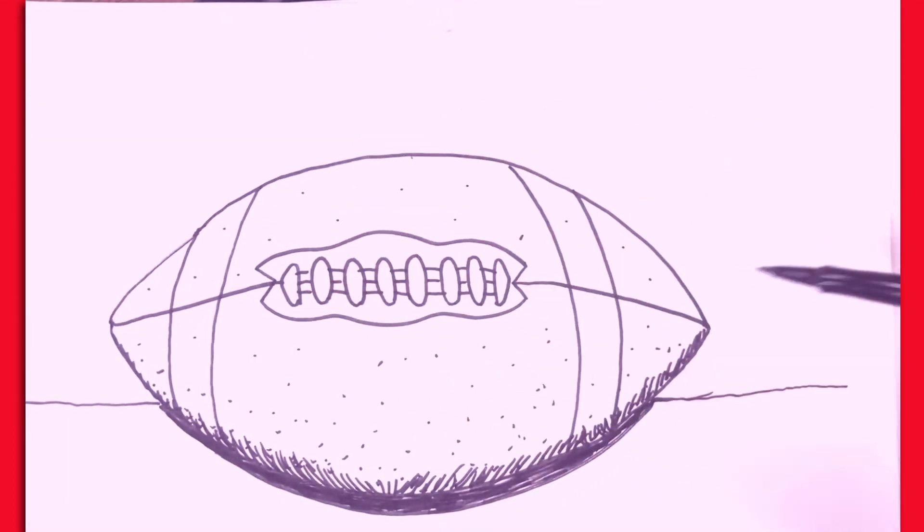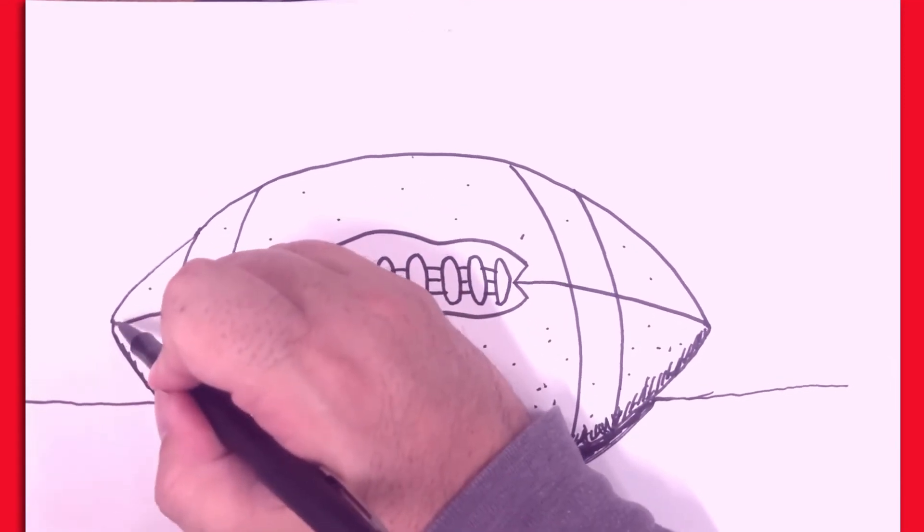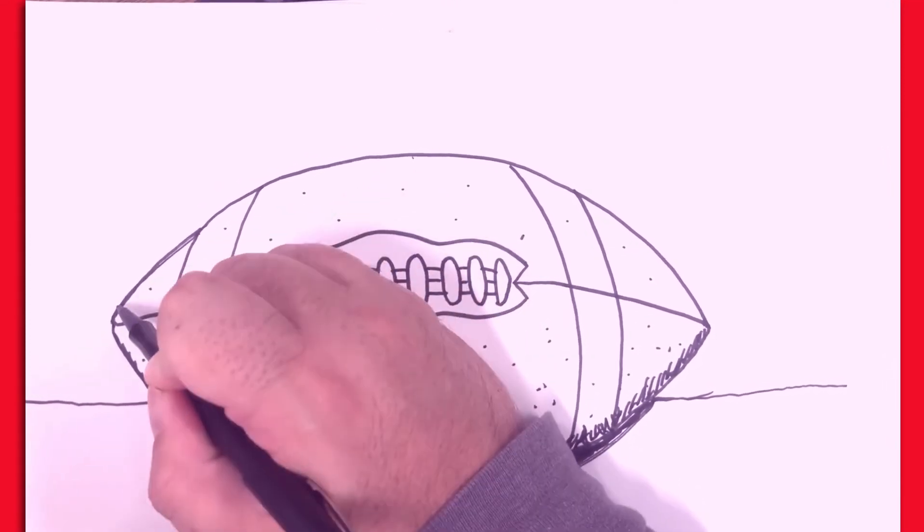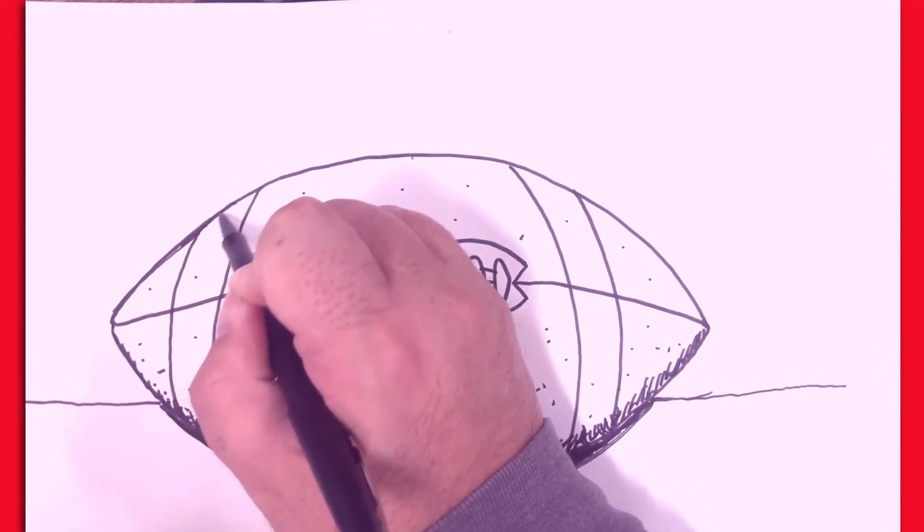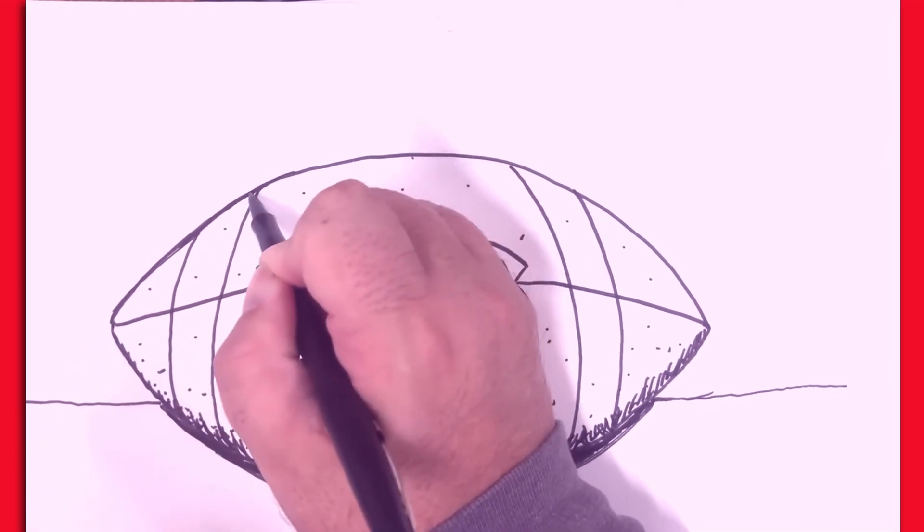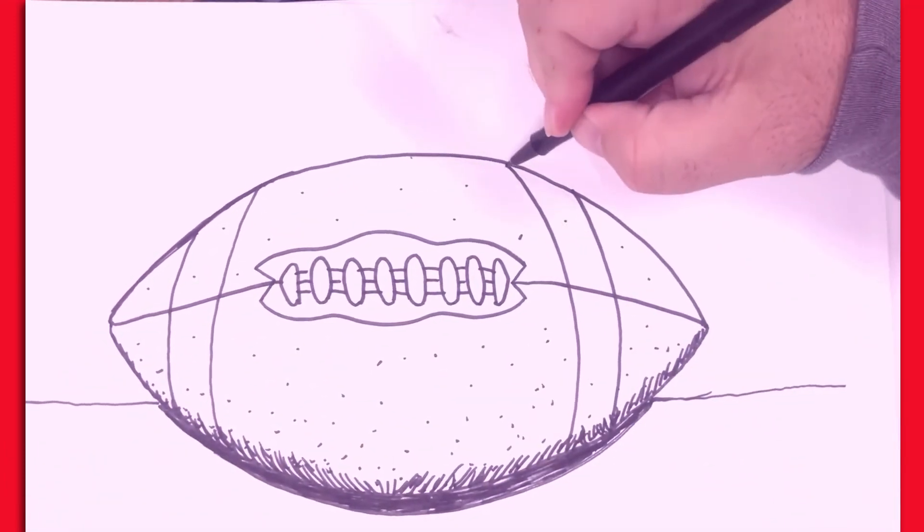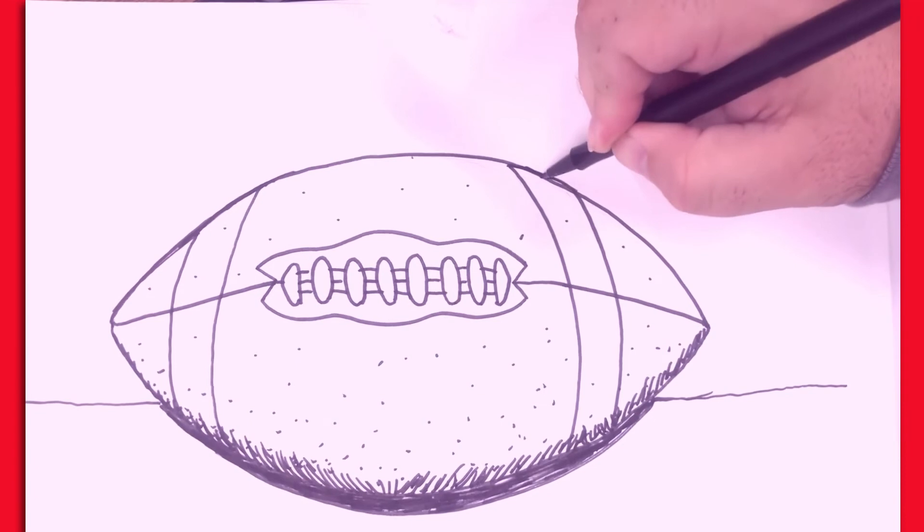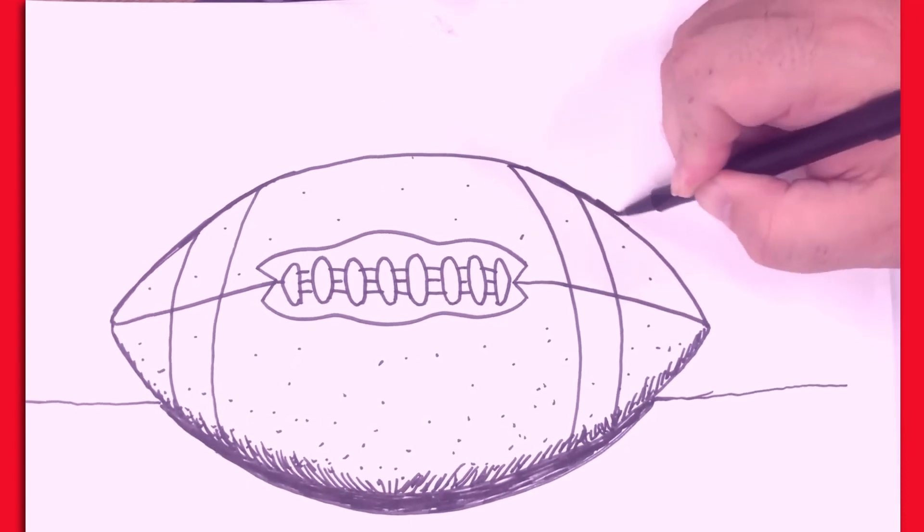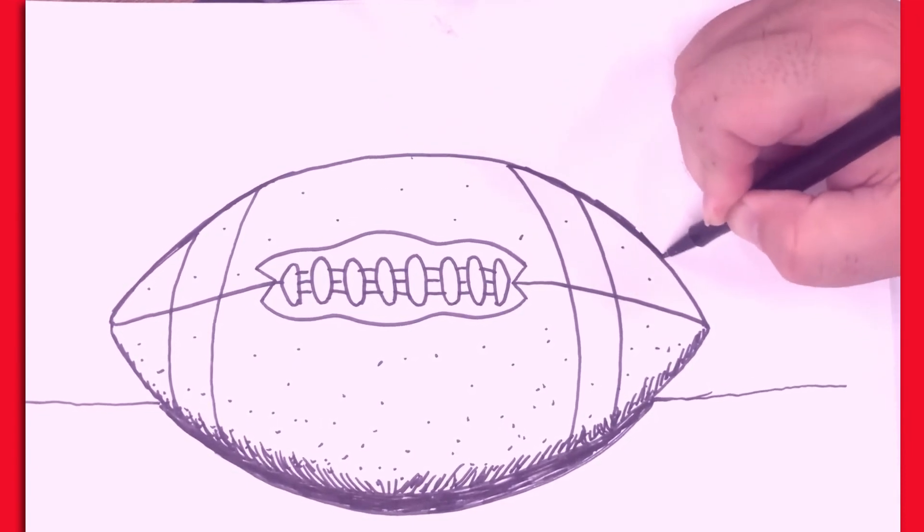Now I'm going to come back to the top of the ball and just kind of clean up this line right here. So it's a little smoother. And doing nice thick black outlines is a great way to do that. It also makes the ball stand out.